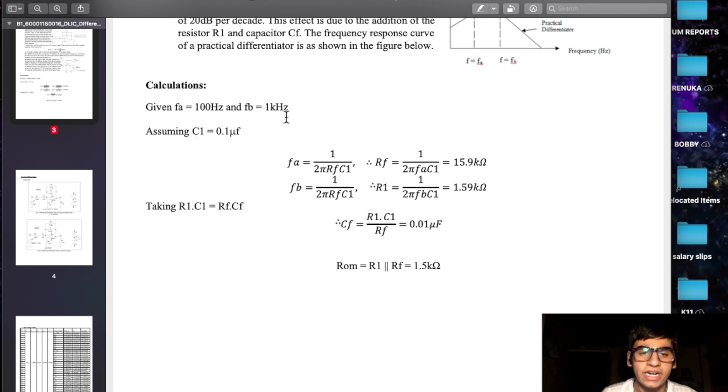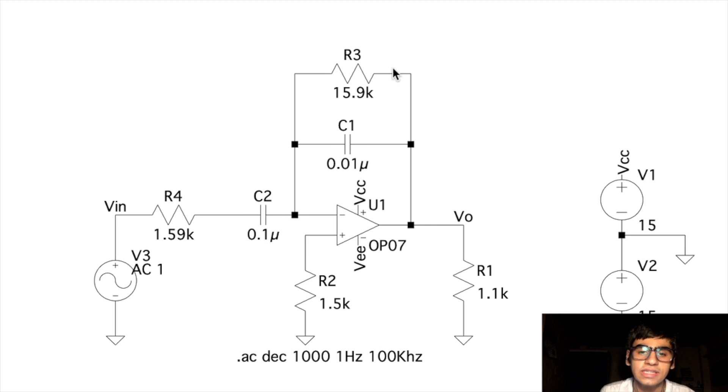Now to obtain these values of Fa and Fb, we can go back to our calculations and obtain the values of our capacitors and resistors accordingly. So if we want a value of Fa as 100 Hz, we can assume the value of C1 capacitor as 0.1 microfarads and using this equation we can calculate the RF value to be 15.9 kOhms. Also, using the relation that Fb is 10 times Fa, we can use the formula for Fb to calculate the R1 value as 1.59 kOhms. Taking R1 C1 as equal to RF Cf, we get a Cf value of 0.01 microfarads. Then for the offset removal resistance, we have the parallel combination of input resistance and the feedback resistance. It gives us a resistance value of 1.5 kOhm. And we have added the same values in our schematic.